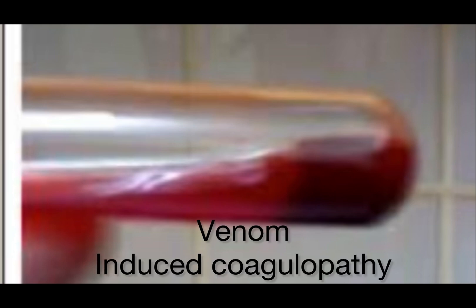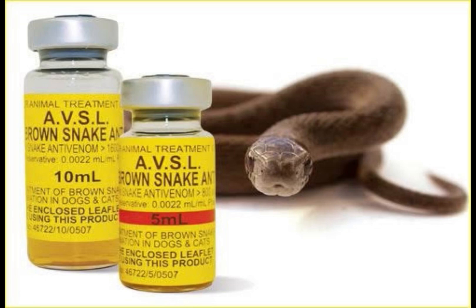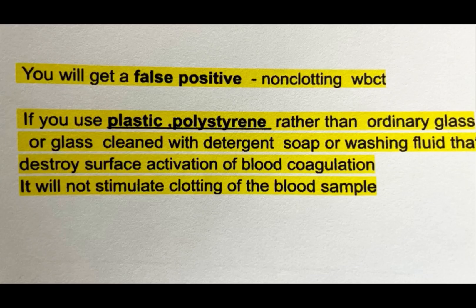Normal clotting means there is no evidence of snake envenomation. If the blood is still liquid, the patient has venom-induced coagulopathy and requires urgent treatment with anti-snake venom (ASV). One important point: you will get a false positive non-clotting result if you use plastic or polystyrene tubes rather than ordinary glass, or glass cleaned with detergent, soap, or washing fluid, as these destroy surface activation of blood coagulation.